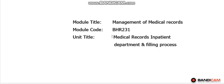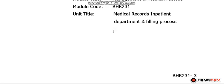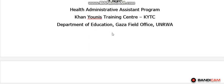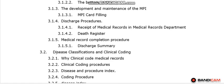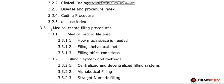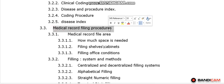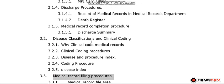I wish you are doing well. Today we are going to discuss Unit 3, Part 1. This unit contains three main subjects. The first subject is the admission procedures. The second subject is the disease classification and the clinical coding. The third subject is the medical record filing procedures.